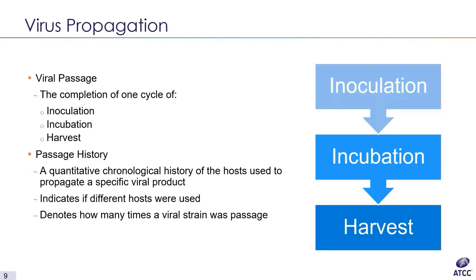Viral propagation can be broken down into three basic steps: inoculation, incubation, and harvest. The inoculation step facilitates attachment between virus and host; incubation allows the virus to replicate; and the harvest step is when the propagated virus is collected. This process is considered a viral passage. Every time a virus is passaged, mutations in the genome can occur, meaning the virus collected at the end of a passage might be slightly different than the virus used at inoculation. Mutations are also likely when changing the type of host.